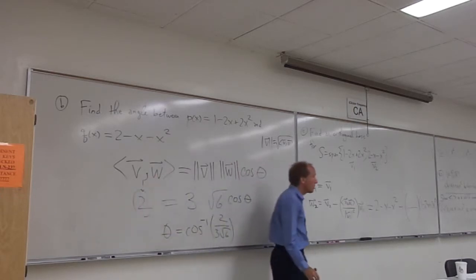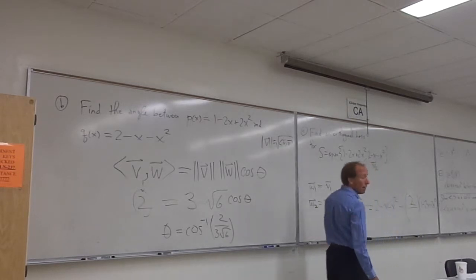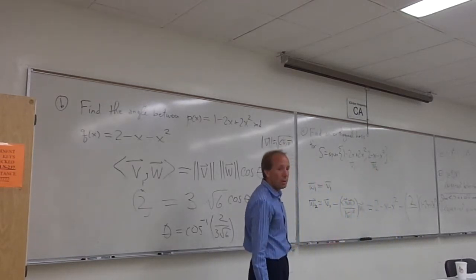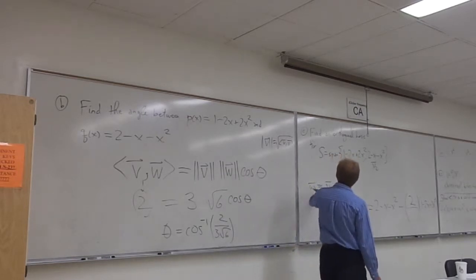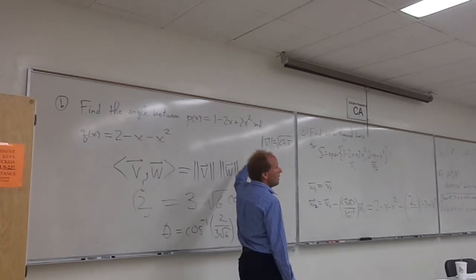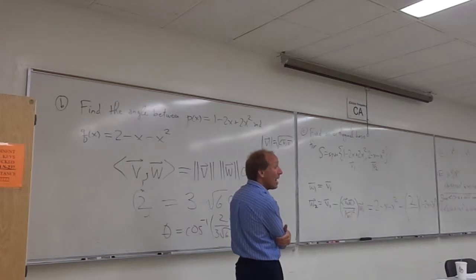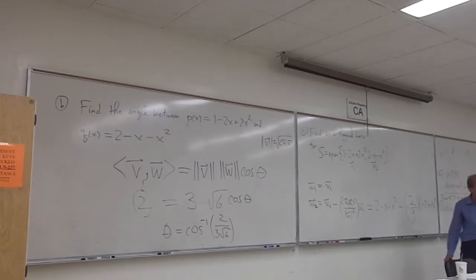Okay, so that goes on top, right? And on the bottom, I have to put the norm of W1. Let's see, which one's W1? W1 is V1, which originally was P of X. I need the norm squared of W1. Can anybody give it to me? 9. It's 9. So this is actually the answer.